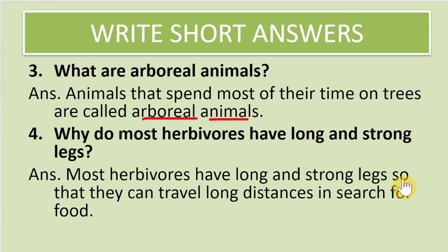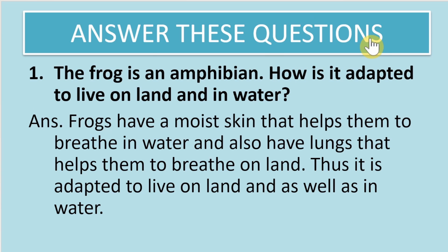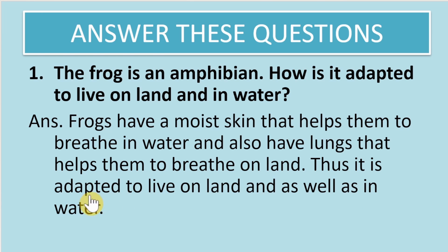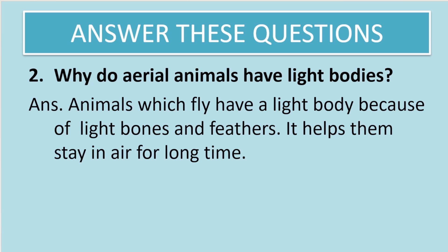Why do most herbivores have long and strong legs? Most herbivores have long and strong legs so that they can travel long distances in search of food. How is a frog adapted to live on land and in water? Frogs have moist skin that helps them breathe in water, and also have lungs that help them breathe on land, so they are adapted to live both on land and in water — making them amphibians.